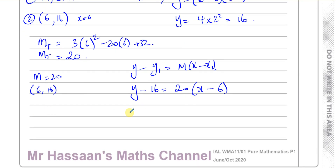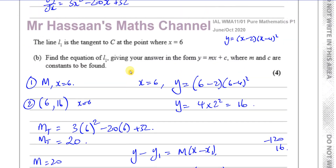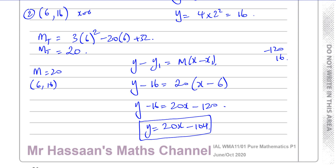Using y - 16 = 20(x - 6): expanding gives y - 16 = 20x - 120, then adding 16 to both sides: y = 20x - 120 + 16 = 20x - 104. So the equation of the tangent L1 is y = 20x - 104, which is in the required form y = mx + c.